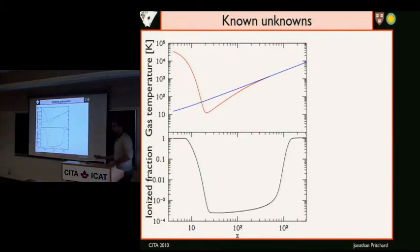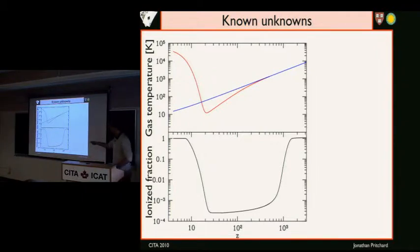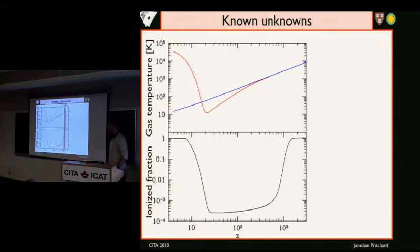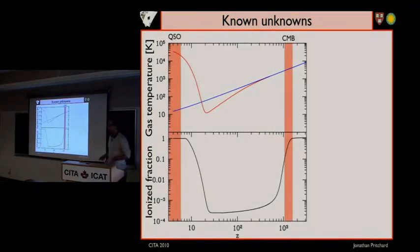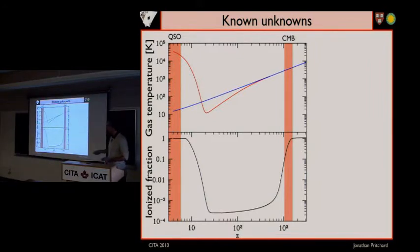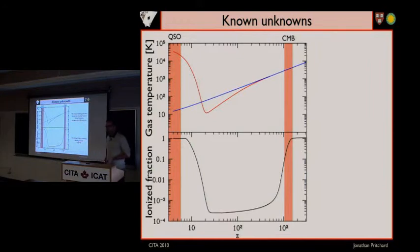To drive home the degree of ignorance we have about the first billion years, one can ask questions about just two simple properties of the gas that fills the universe: the gas temperature and the ionization fraction. Plotting these as a function of redshift, we have measurements of the cosmic microwave background at redshift of a thousand, telling us when recombination happens. We also have observations of absorption lines in the spectra of quasars, telling us the universe is mostly ionized below redshift six. But we know essentially nothing about the details in between those two points, spanning many orders of magnitude.